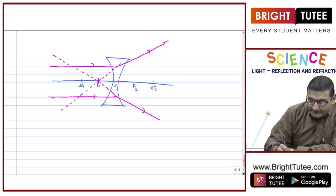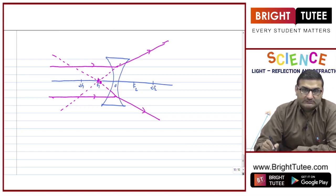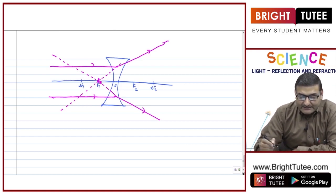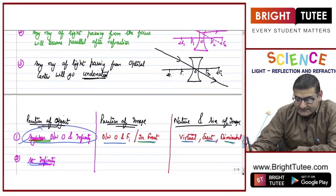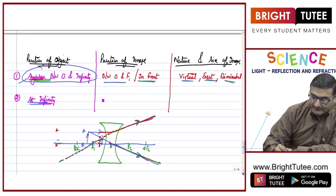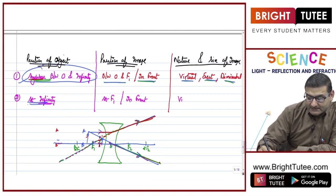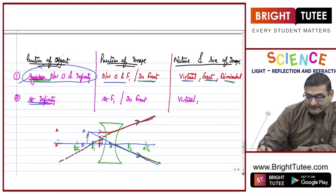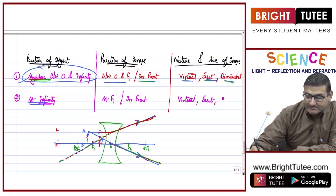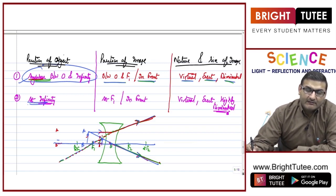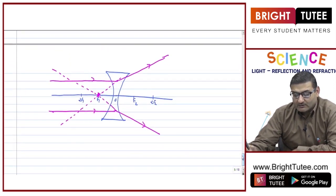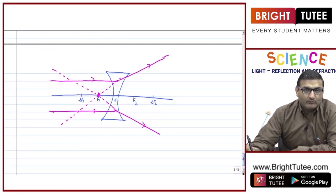The image formed is at f1, in front of the lens. The image is virtual because the light rays are not actually meeting. It is erect, above the principal axis, and it is a highly diminished, point-sized image formed at the focus in front of the lens.